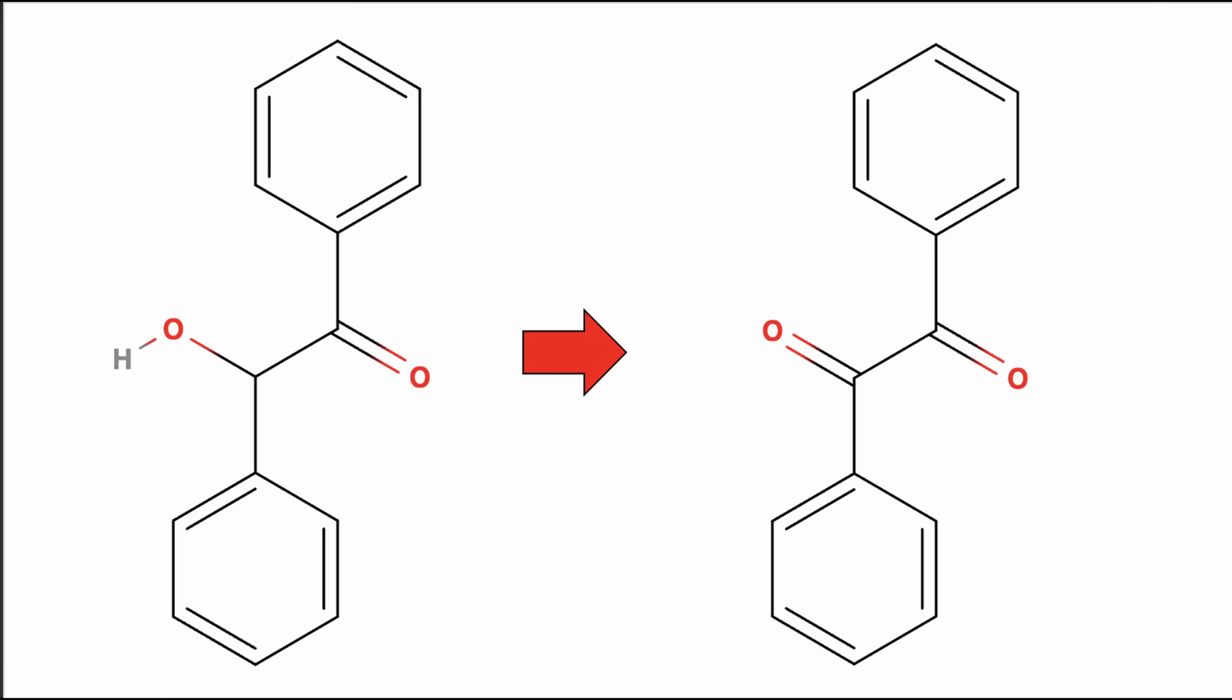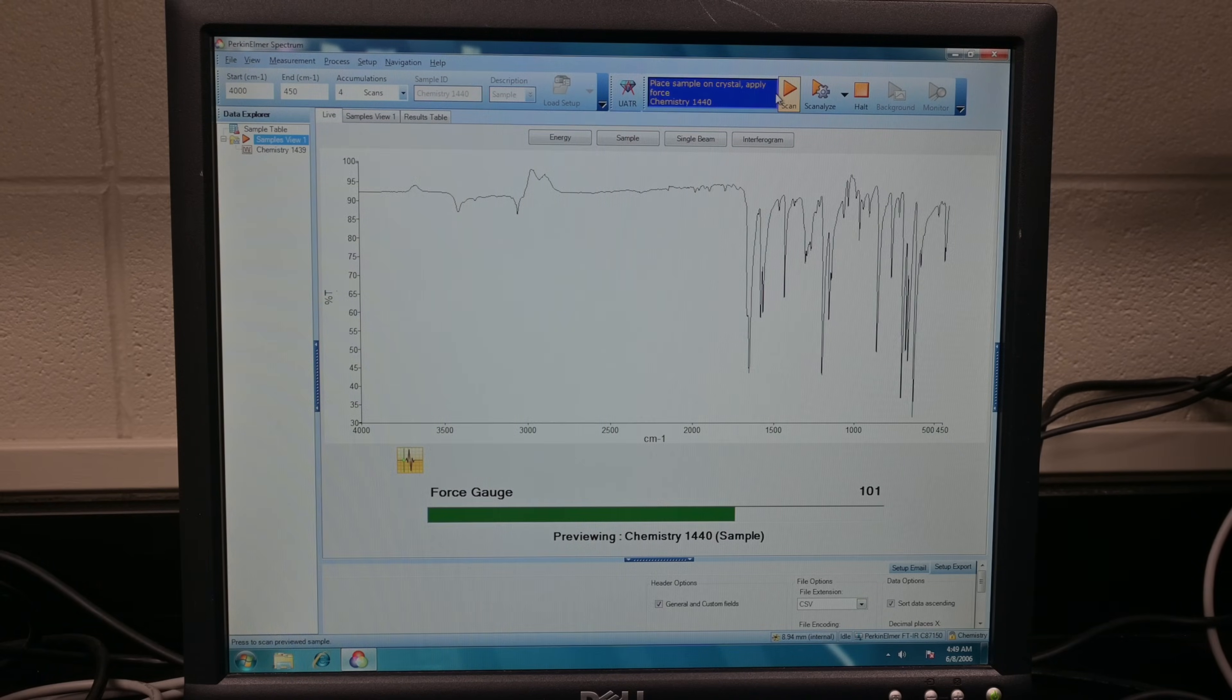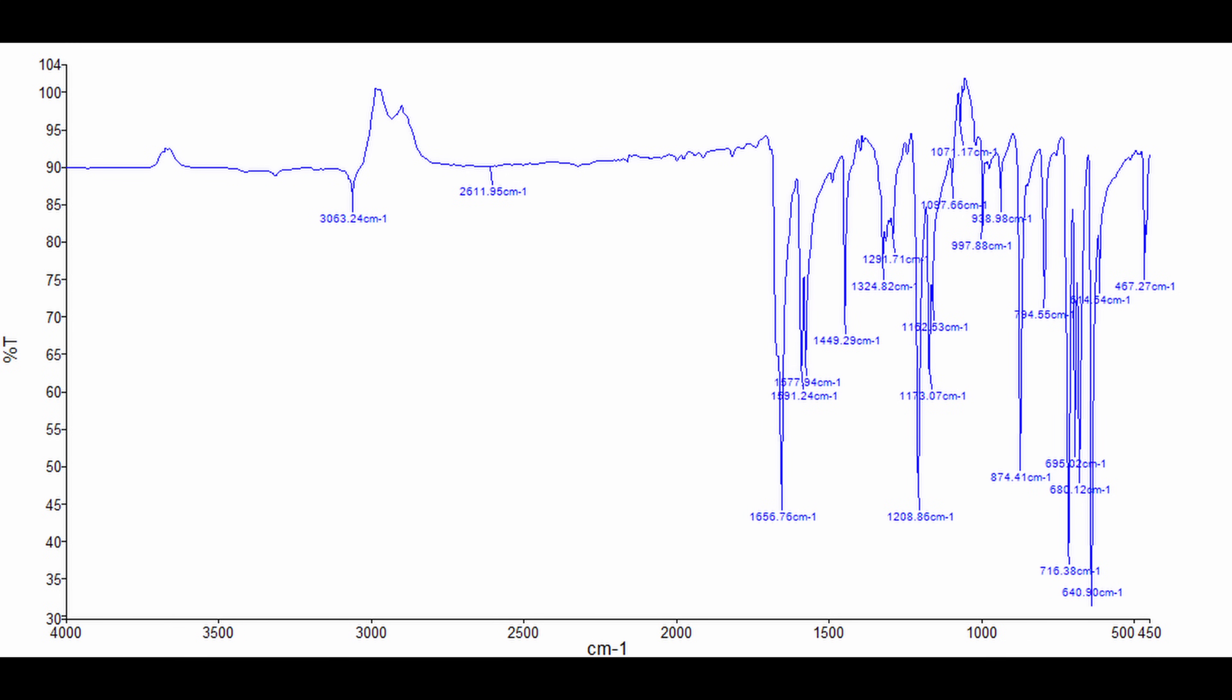When benzoin is oxidized to benzil, a new set of identifiable changes emerged in the FTIR spectrum, reflecting the chemical transformation clearly. Benzil, a diketone structure, is readily distinguished by the disappearance of broad hydroxyl peaks present in benzoin, confirming the removal of the alcohol group during oxidation. Instead, benzil exhibits two intense distinctive carbonyl stretching vibrations occurring between 1685 and 1665. The absence of any broad peaks around 3400 signifies a successful oxidation reinforcing the purity and accuracy of the benzil synthesis.